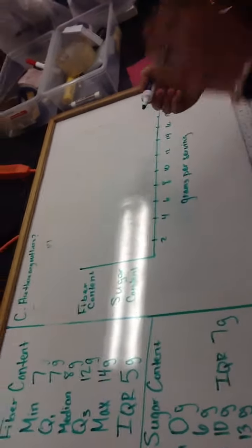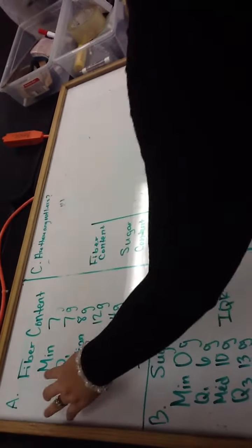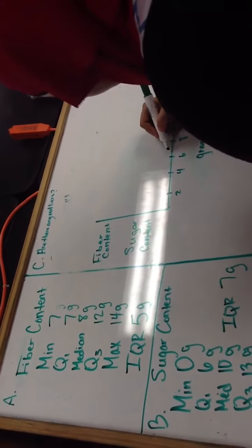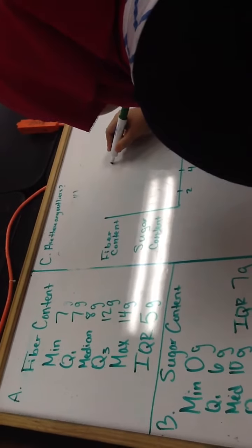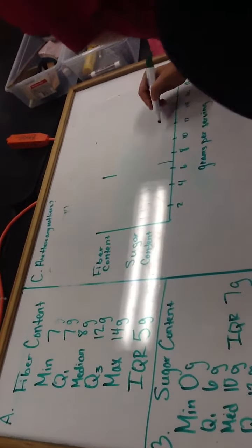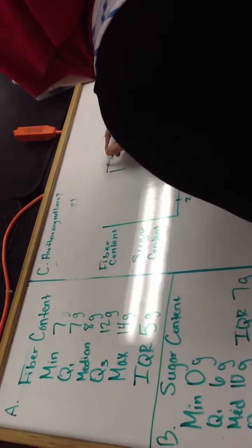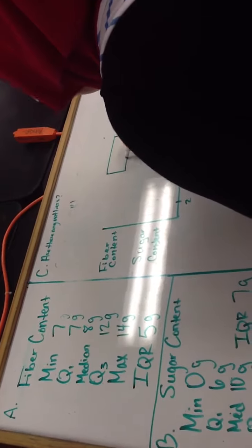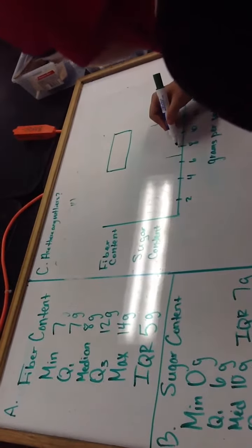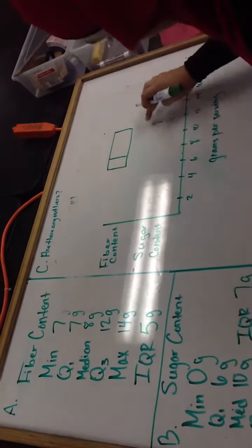Okay, so we will do fiber content first. First, you draw your box from Q1 to Q3. Q1 is 7, so that's about here, and up here. Q3, which is 12, which is right here. Then connect. Make it about a rectangular box. And the median is at 8, so you draw a line where your median is.